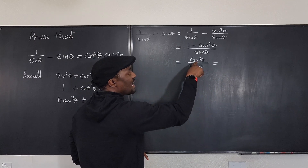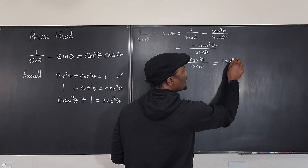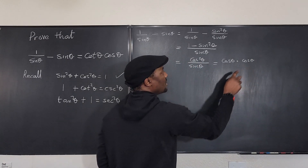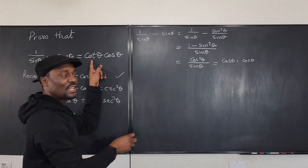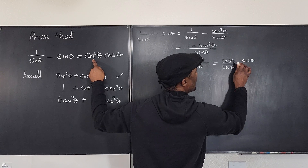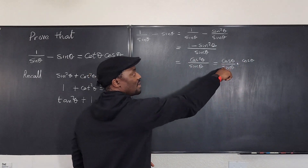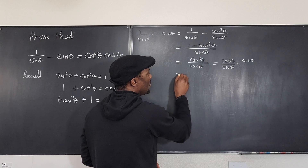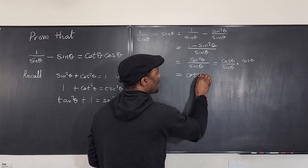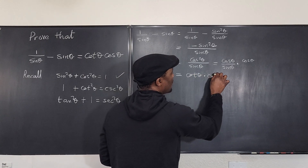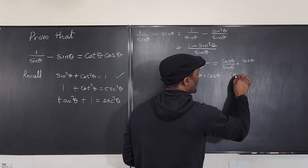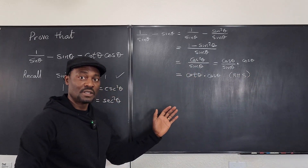I can write cos²θ as cosθ × cosθ, and then put sinθ under one of them. I want to get cotangent, so one factor becomes cosθ/sinθ. It doesn't matter which one takes the sine denominator. So the result is cotθ × cosθ, which equals the right-hand side. So we've gone from the left to the right.